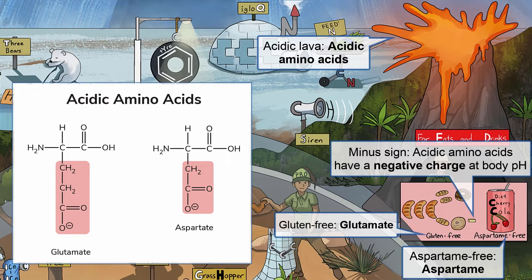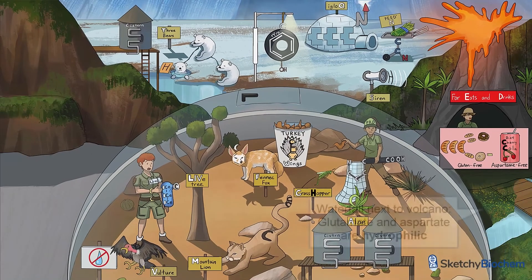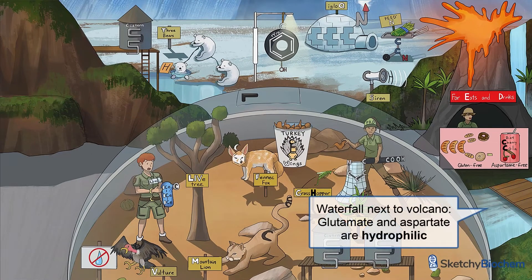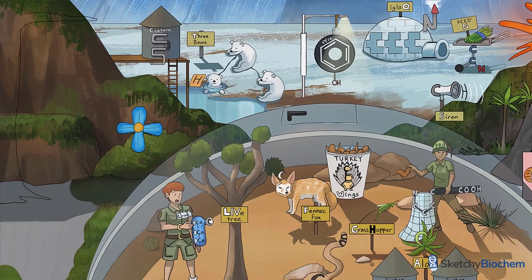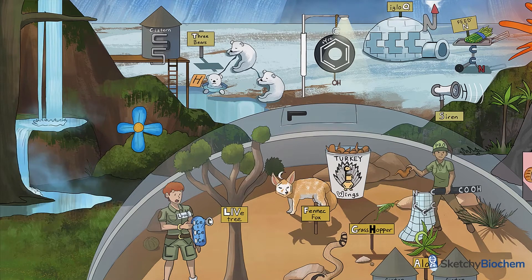The side chains of glutamate and aspartate have a negative charge at body pH. We drew a waterfall to help you remember that glutamate and aspartate are hydrophilic, or water-loving. Let's now turn your attention to the left side of the zoo, which has now been converted to a jungle. In this area, we'll talk about the basic amino acids. Note the water pools and waterfalls because the basic amino acids are also hydrophilic.